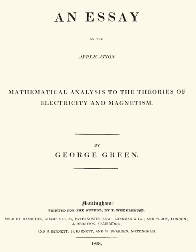An essay on the application of mathematical analysis to the theories of electricity and magnetism is a fundamental publication by George Green, where he extends previous work of Simeon Denis Poisson on electricity and magnetism. The work in mathematical analysis, notably including what is now universally known as Green's theorem, is of the greatest importance in all branches of mathematical physics. It contains the first exposition of the theory of potential.